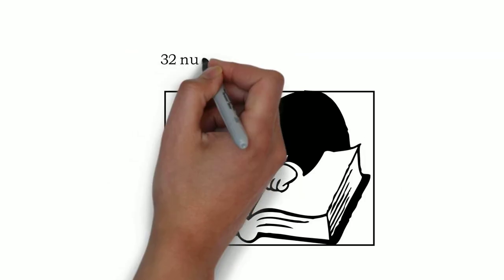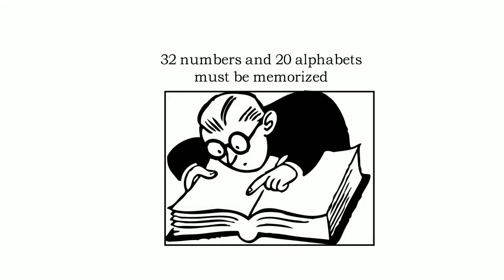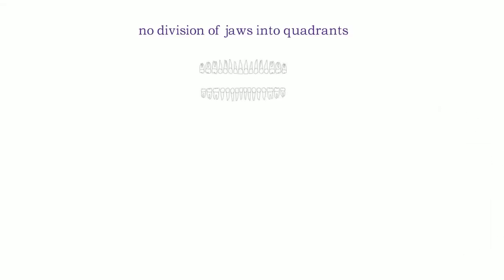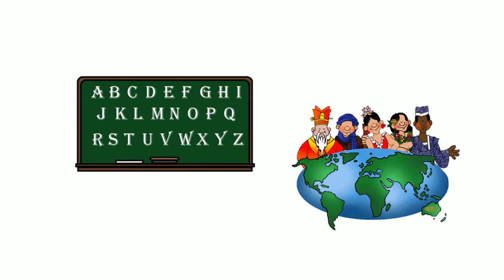The biggest disadvantage of universal system is that 32 numbers and 20 alphabets for each tooth must be memorized. This is because the system does not divide the jaw into quadrants and so does not give a graphical picture in mind. Another disadvantage is the use of English alphabets which makes it difficult for non-English speaking populations.